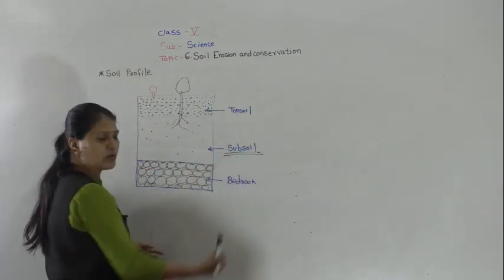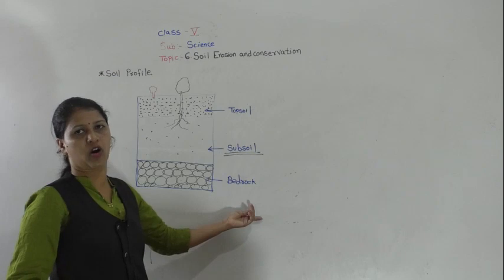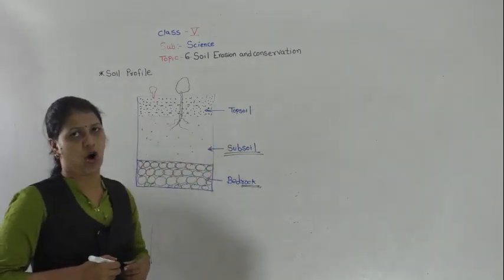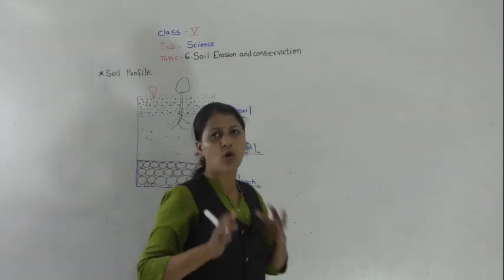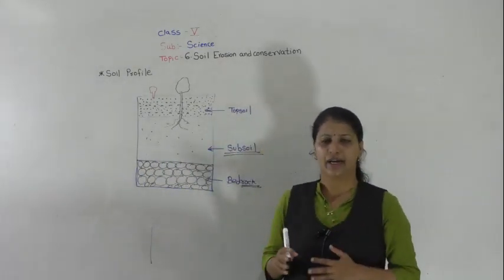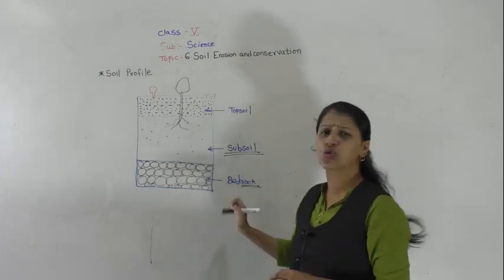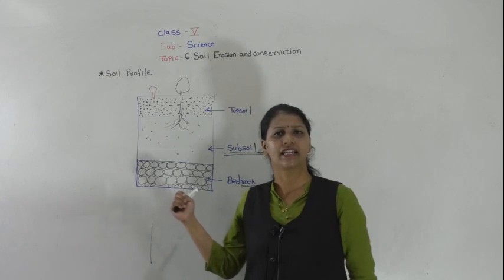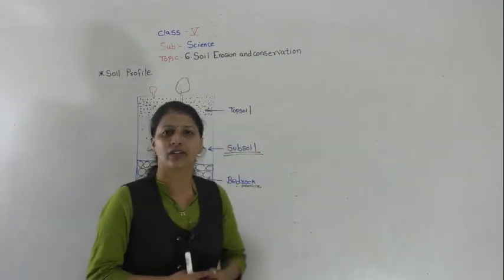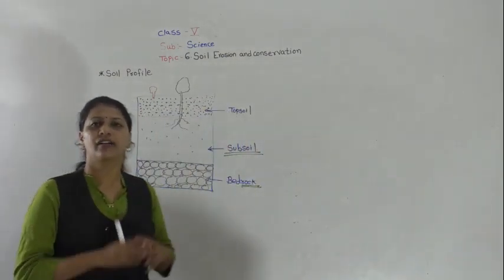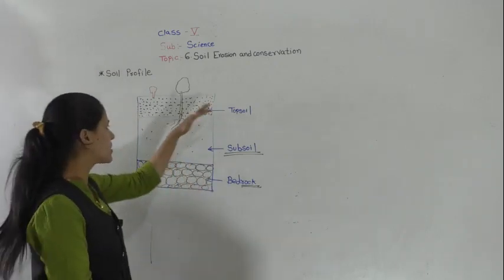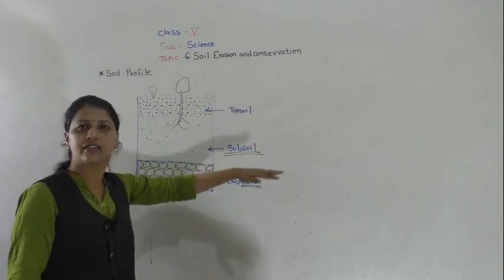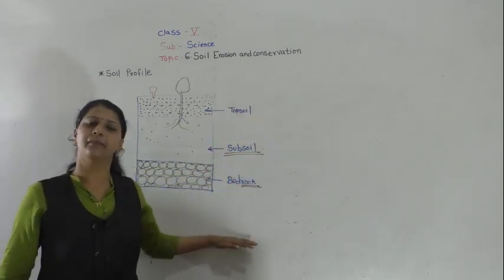Below the subsoil is bedrock. The word itself tells us it consists of rock — only rock. Bedrock is very deep inside the earth. So the soil profile consists of three layers: topsoil, subsoil, and bedrock.